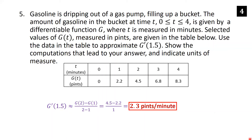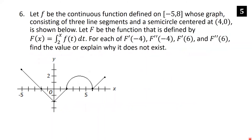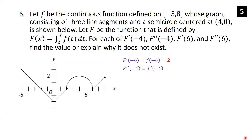Let F(x) = ∫₂ˣ f(t) dt, where f is continuous on [−5, 8] with a graph of three line segments and a semicircle centered at (4, 0). By the Fundamental Theorem of Calculus, F′(x) = f(x). So F′(−4) = f(−4) = 2 (the point (−4, 2) is on the graph). F″(−4) = f′(−4) = −1 because the slope of that line segment is −1.